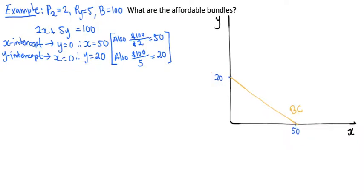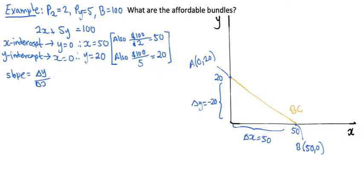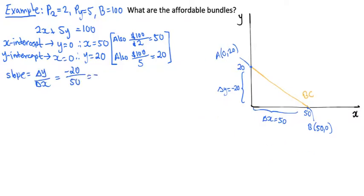In terms of slope, mathematically, going from bundle A, which is 0 units of X and 20 units of Y, to bundle B, which is 50 units of X and 0 units of Y, requires reducing 20 units of Y in order to get 50 units of X. The slope, the change in Y over change in X is negative 2 over 5.